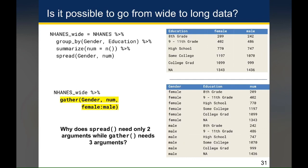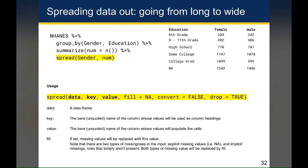The way the gather function works is you supply the key and value arguments just like you did for spread, except you have a third argument that tells gather which columns you actually want to gather. So why does spread need only two arguments while gather needs three? When we spread the gender variable to become multiple columns, the gender variable and the num variable already existed in the data frame, and we didn't have to tell the pipe which data frames to create, because the spread function looks at the unique values of gender and knows those are the variables it needs to create.